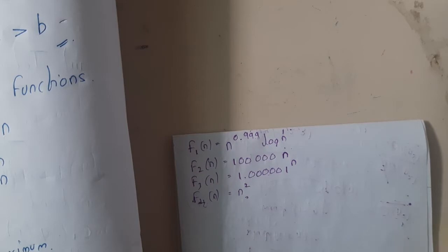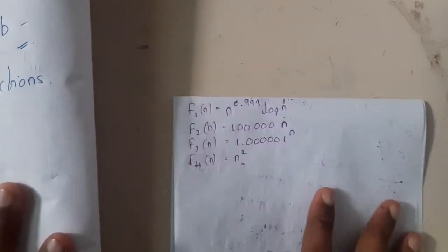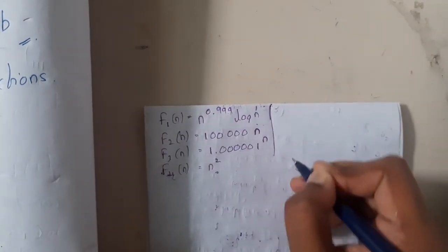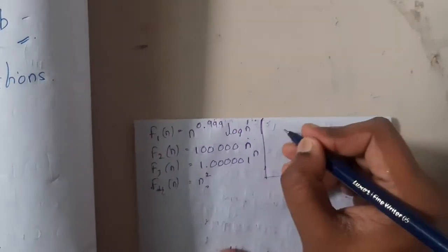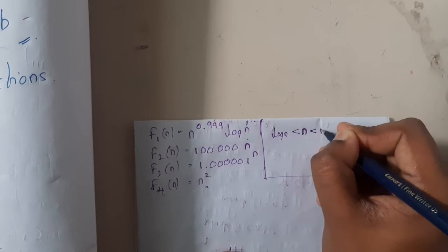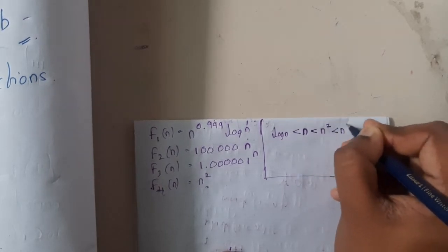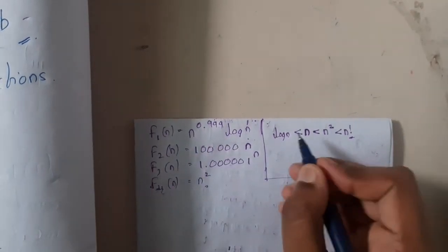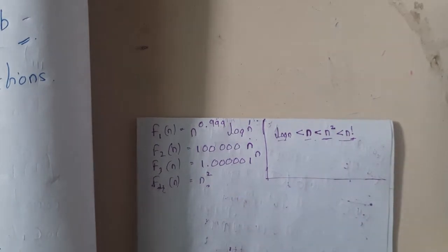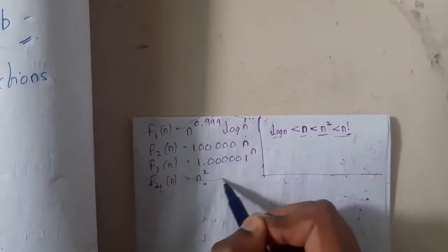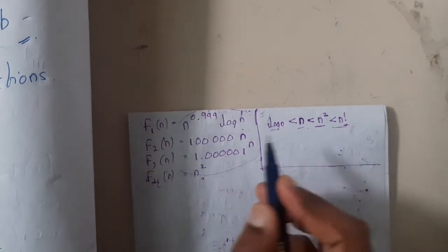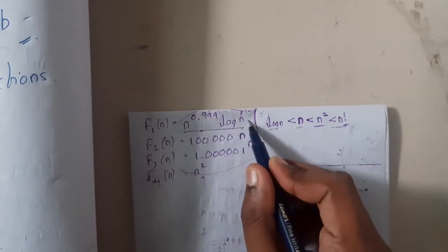How do we identify which is maximum and which is minimum? There are some small tricks. The minimum value among common functions is log n. The order is: log n < n < n² < n! in the long run with large values, not small values.